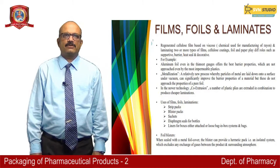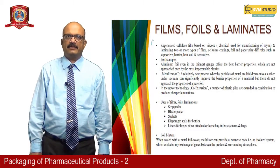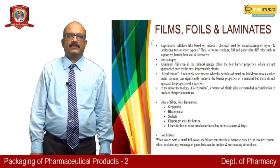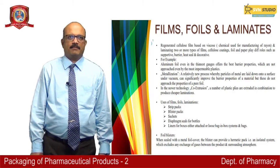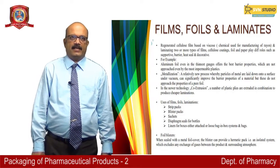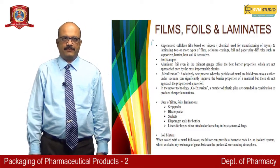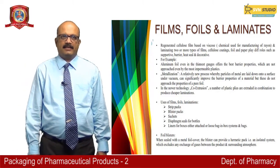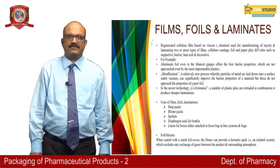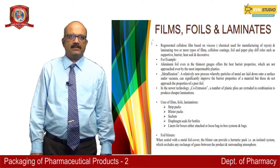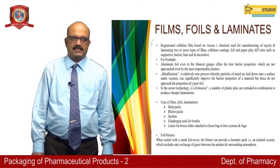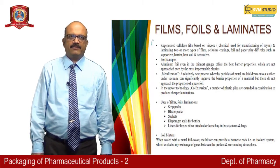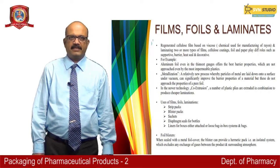Regenerated cellulose film based on viscose, which is a chemical used for the manufacturing of rayon, involves laminating two or more types of films. Cellulose coatings, foil and paper play very different roles such as supportive barrier, heat seal and decorative. Aluminum foil, widely used in food packaging and in the household, offers excellent barrier properties.